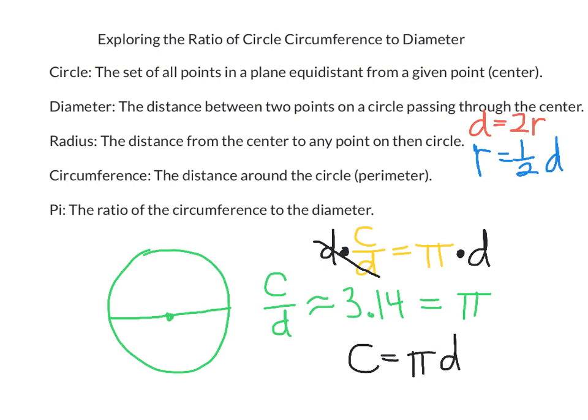Something else we can do is replace diameter with what diameter equals. And since diameter equals 2r, we can also say the circumference equals pi times 2r. And many times you'll see this written as 2 pi r. The order really doesn't matter. But both of these, pi times diameter and pi times 2 times radius, are both used for finding circumference if we know the diameter or the radius.